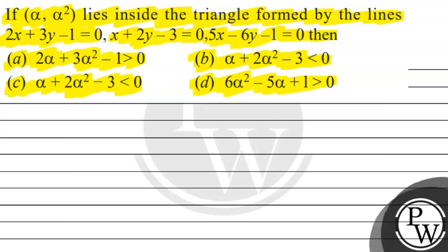So given: alpha comma alpha square is a point which has to lie inside the triangle formed by the lines. The first equation is 2x plus 3y minus 1 is equal to 0, the second equation is x plus 2y minus 3 is equal to 0, and the third equation is 5x minus 6y minus 1 is equal to 0.